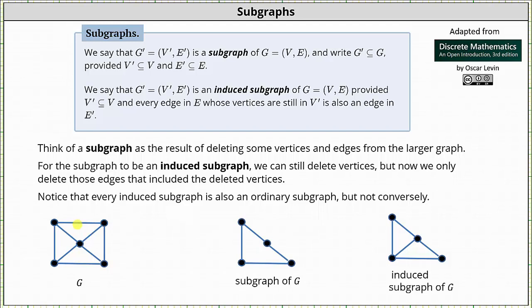We say that the graph G prime, which is equal to the ordered pair V prime comma E prime, is a subgraph of the graph G, which is equal to the ordered pair V comma E. We write G prime is a subgraph of G, provided V prime is a subset of V, and E prime is a subset of E. Remember, V prime is the set of vertices of G prime, V is the set of vertices of G, E prime is the set of edges of G prime, and E is the set of edges of G.